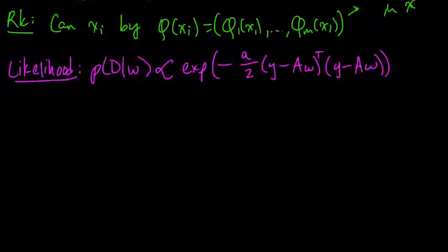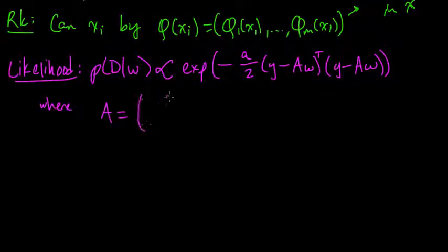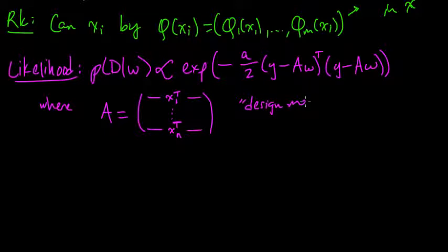And a here, this is where a is this design matrix thing. You remember this. We take our vectors x and we put them into x1 transpose is the first row down to xn transpose is the last row. We put them in this matrix and we call that A. And that's the design matrix.